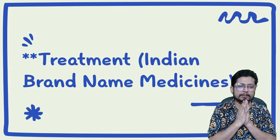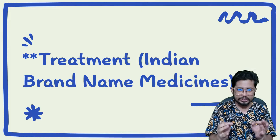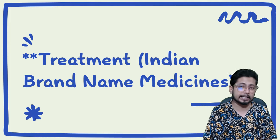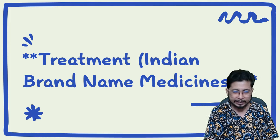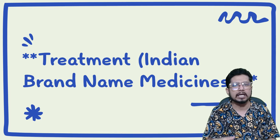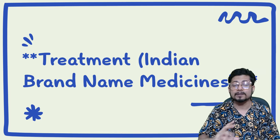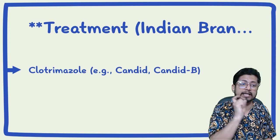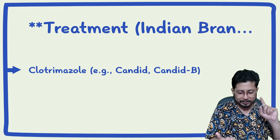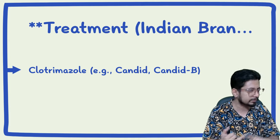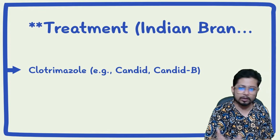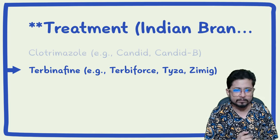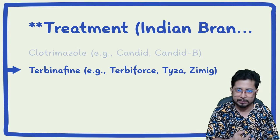For treatment, I'll share Indian brand names of medications used to treat tinea cruris. These medications help to a certain extent, especially during monsoon season in India, but guidelines are equally important. Antifungal drugs include clotrimazole — for example, Candid — available as powder and topical ointment. Terbinafine — for example, Terby, Force Tiza, and Ziming — is available as ointment and also in tablet or capsule format.